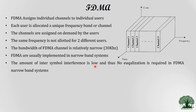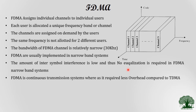The amount of inter-symbol interference in FDMA is typically low because guard bands are introduced between channels, naturally reducing interference. This means there is no separate need for equalization techniques in the system, which is an advantageous point of FDMA. Additionally, FDMA is a continuous transmission scheme because no separations are made on the time axis.